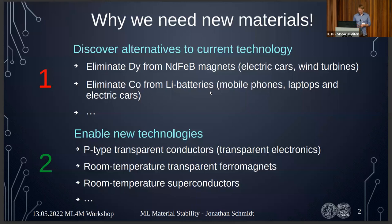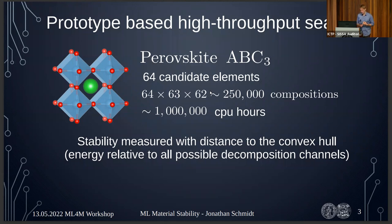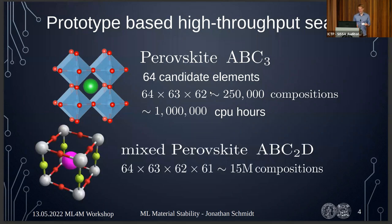The traditional way to find new materials efficiently is prototype-based high-throughput searches. We take a known structure — like the perovskite structure from the last talk — fill it with candidate elements, get a few hundred thousand compositions, then use a million or more CPU hours per ternary composition to do geometry optimizations, get the energy, go to the convex hull, and determine stability from the distance to it.